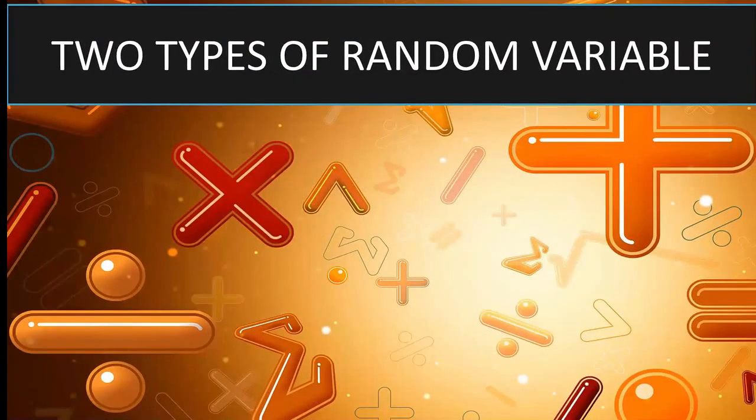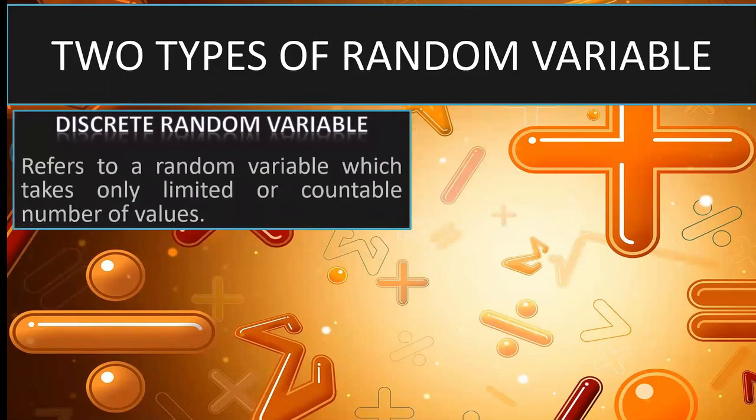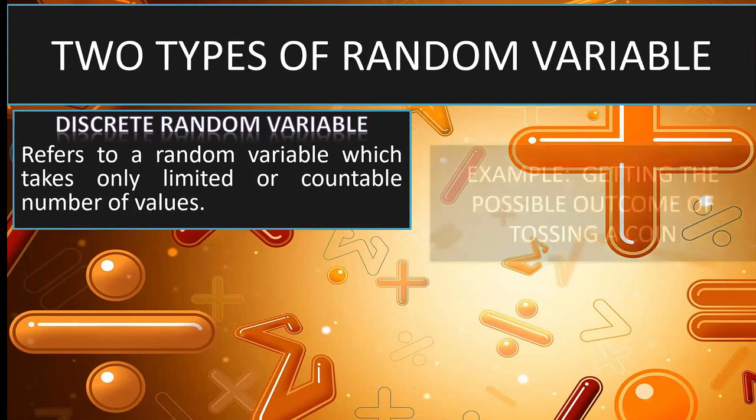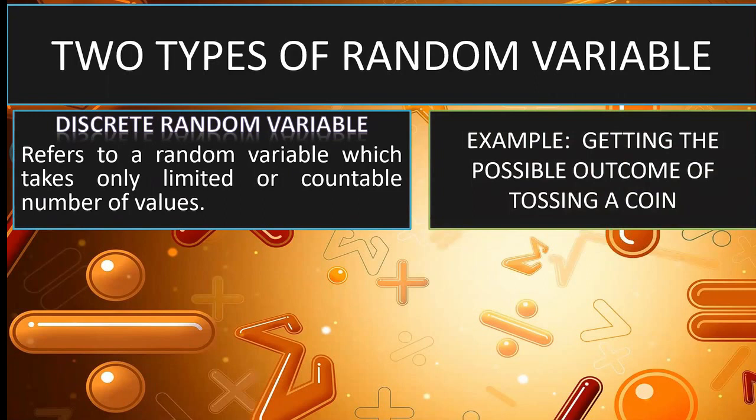Let us now discuss these two types. The two types of random variable are discrete and continuous random variable. Discrete random variable refers to a random variable which takes only limited or countable number of values. So, the keyword here is limited and countable. For example, tossing a coin will give us 2 possible outcomes. Thus, making it an example of discrete random variable. Another example is the score you got in a statistics and probability test. Since the test has a limited number of items, so is your score.